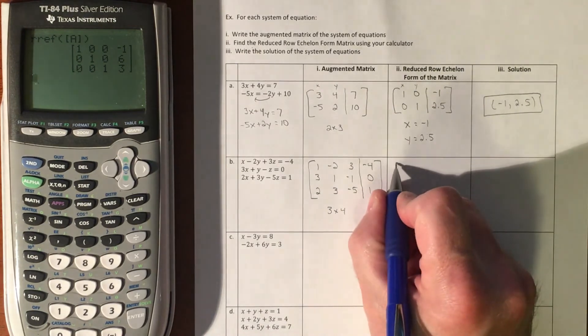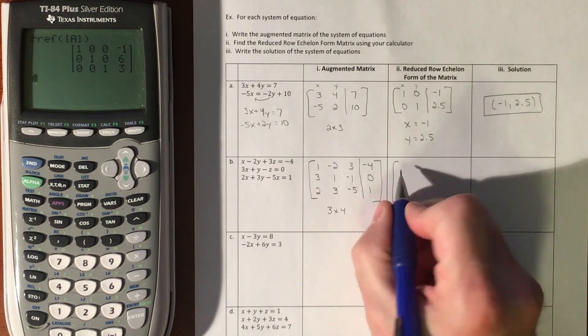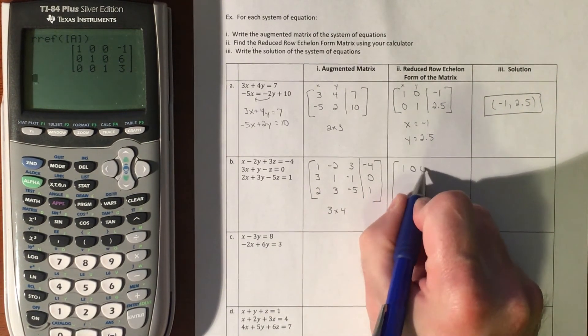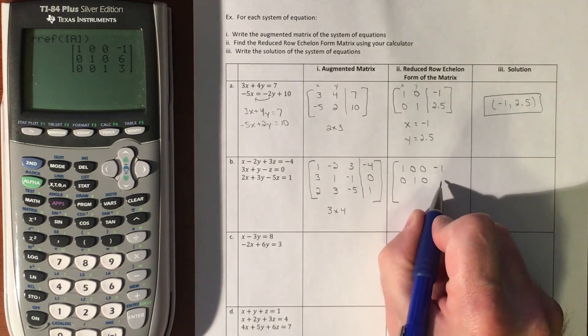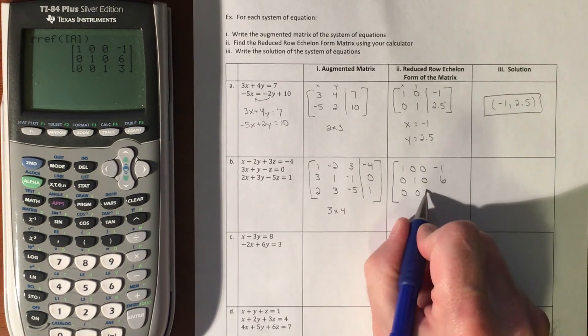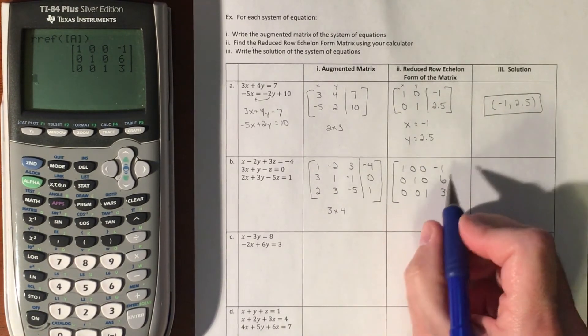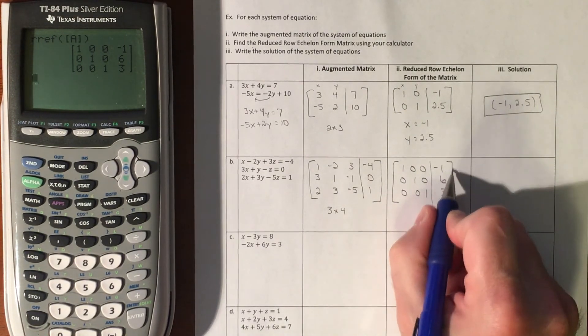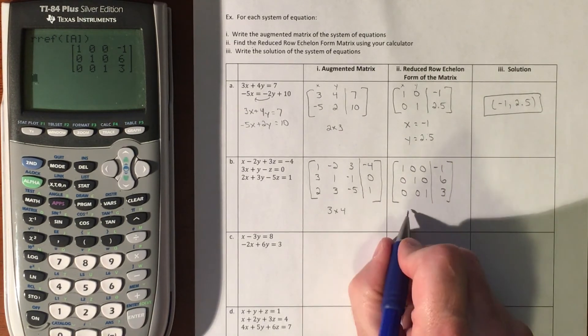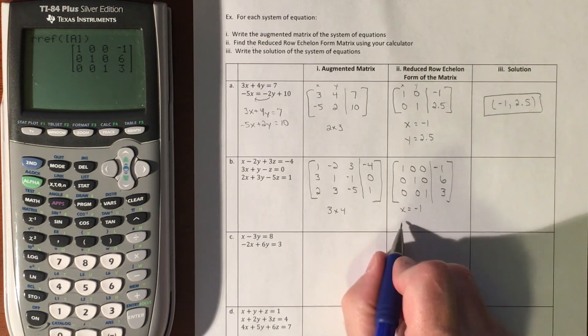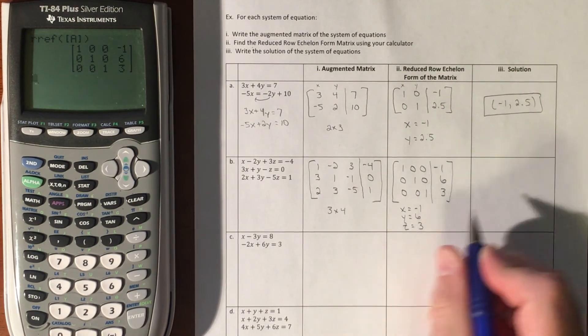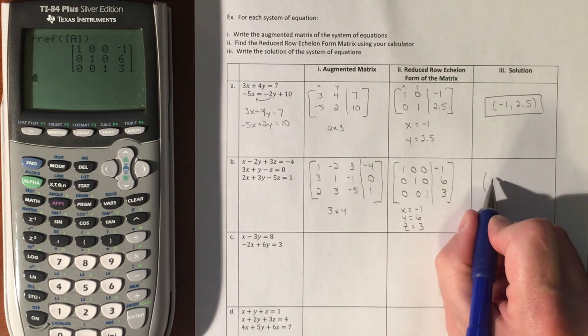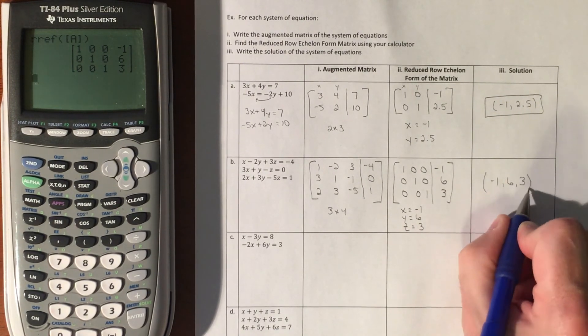We get 1, 0, 0, negative 1, 0, 1, 0, 6, 0, 0, 1, 3. This is your X: X equals negative 1, Y equals 6, Z equals 3. So our solution is negative 1, 6, 3.